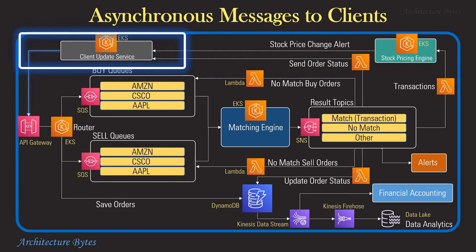The client update service, which is a containerized application, is responsible for sending all messages to the stock broker applications asynchronously over WebSockets via API Gateway. These messages are stock price change alerts and order status updates. For this to work, it must know the WebSocket connection ID for the stock broker application. This connection ID is created when the stock broker application initiates a WebSocket connection for the first time. The application could save this connection ID against the stock broker name in a cache or DynamoDB database.